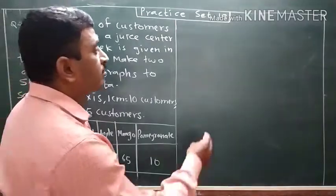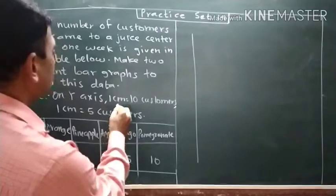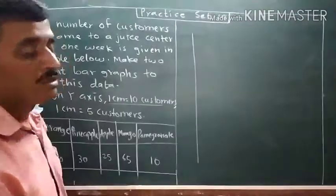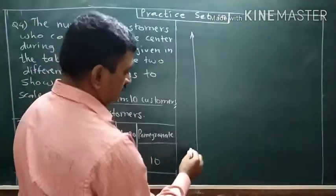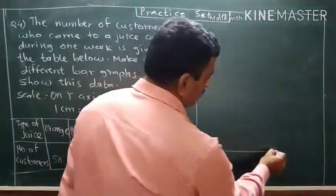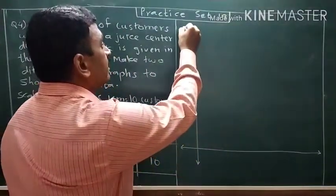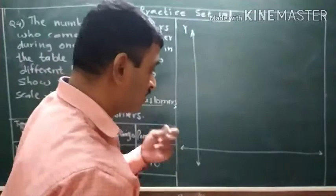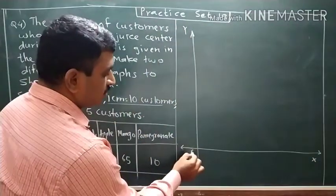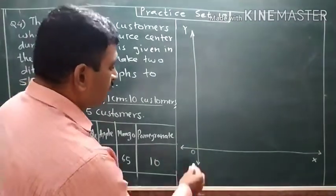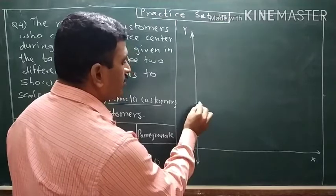Now we can draw by using the first scale — one centimeter is equal to ten customers. So, the vertical line is the y-axis, the horizontal line is the x-axis, and the intersection of these is called zero. This is the one centimeter distance on your graph.